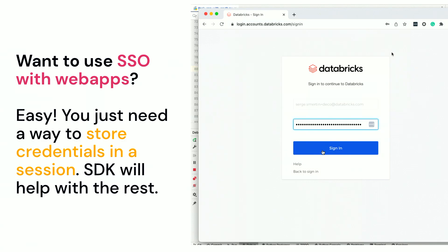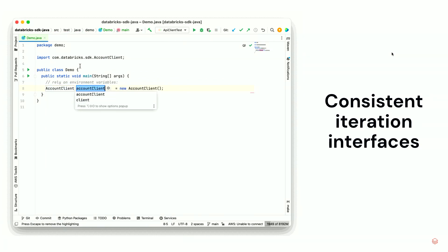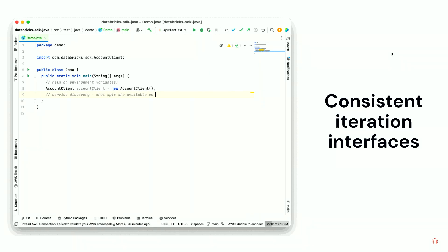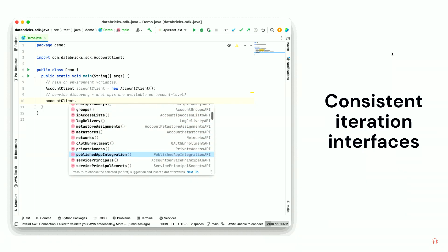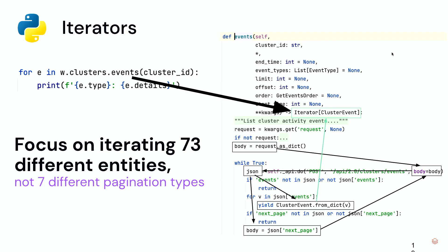All SDKs are consistent, mainly consistent with the language they are written in. For example, in the Java SDK when iterating over workspaces, a Java developer expects that a method called list returns an iterator. Regardless of whether the API is paginated or not, you get an iterator that works the way your language expects. Databricks knows internally which APIs use which pagination type and pre-generates this code so you can focus on integrating with Databricks instead of reading documentation.